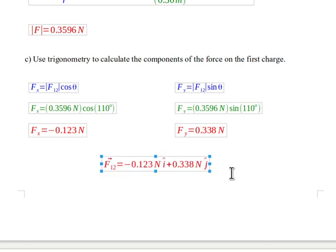I can express this force again on the first particle due to the second particle, as the x component, the minus 0.123 newtons is in the i-hat direction, and then plus 0.33 newtons in the j-hat direction.